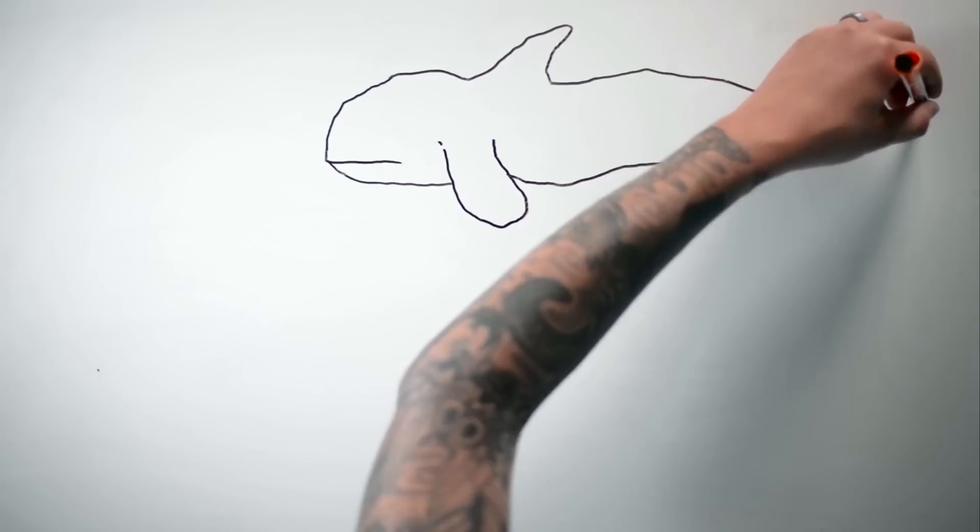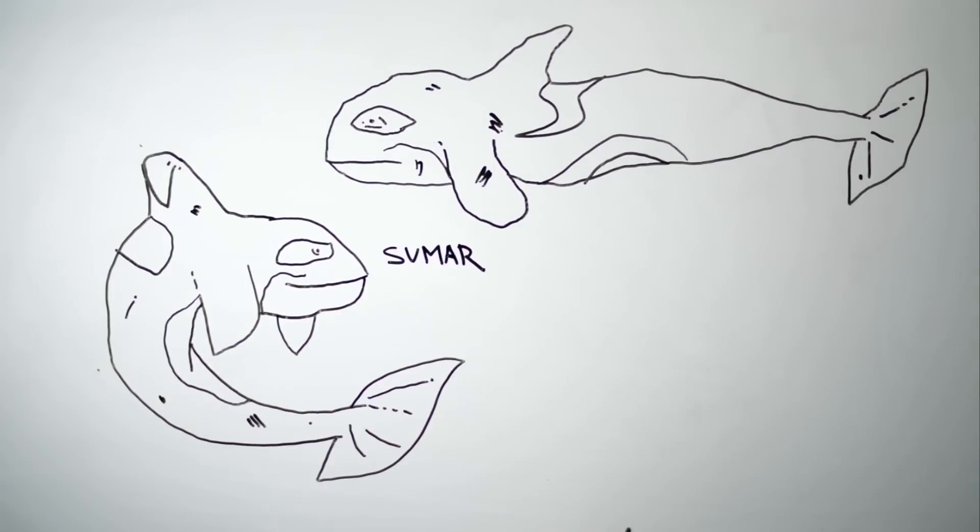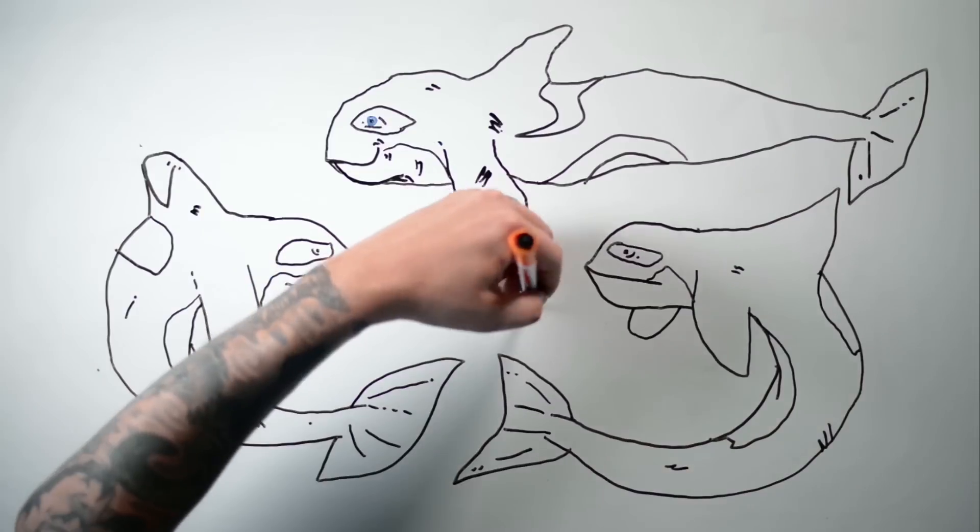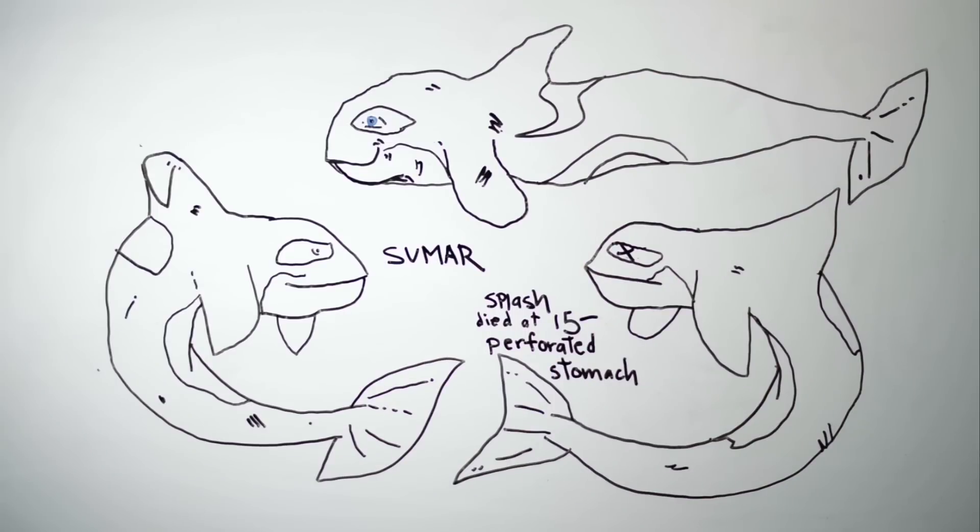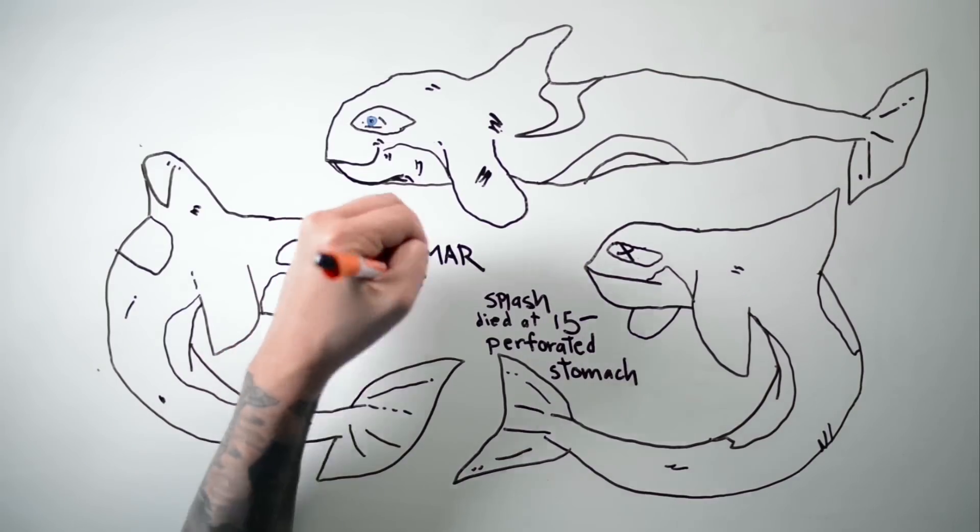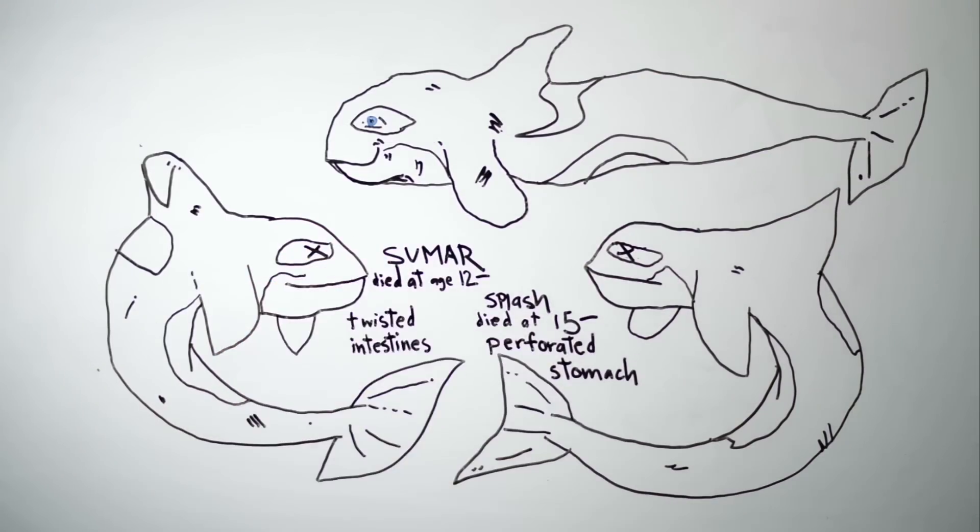A few years later, another whale named Sumar came to San Diego after his mom in Orlando rejected him. That happens a lot here, I've noticed. But a few years later, I watched Splash die in a nearby tank. And a few years after that, Sumar died too.